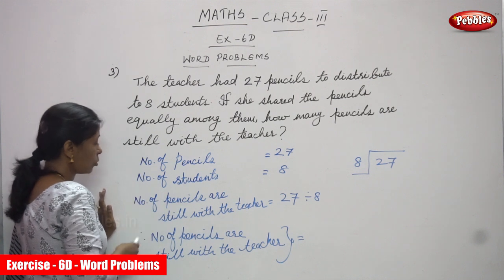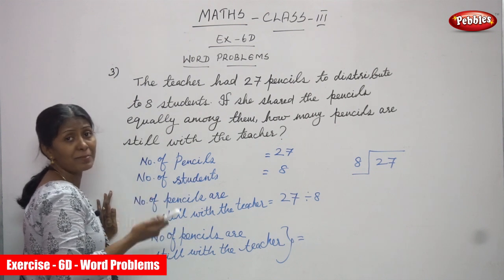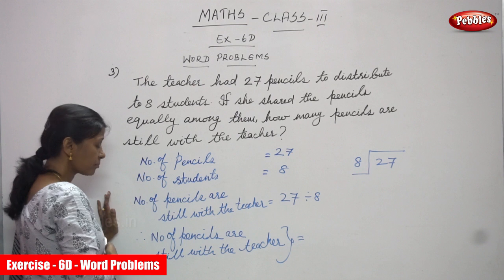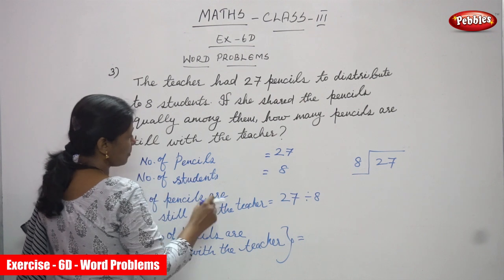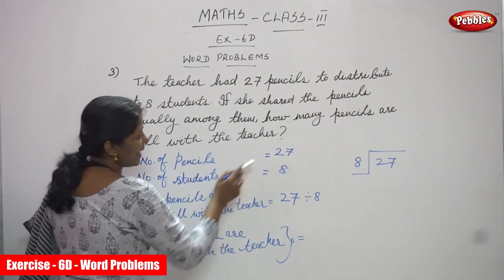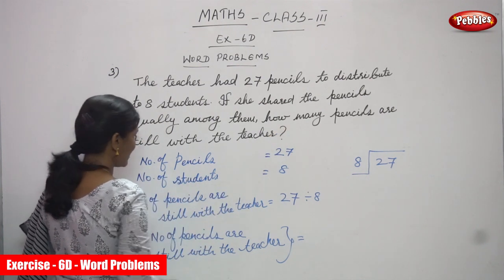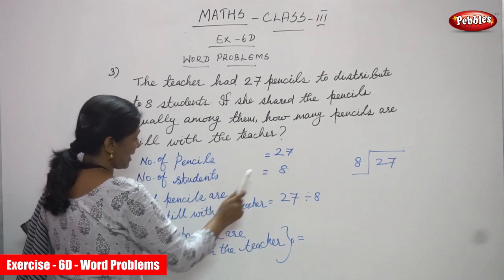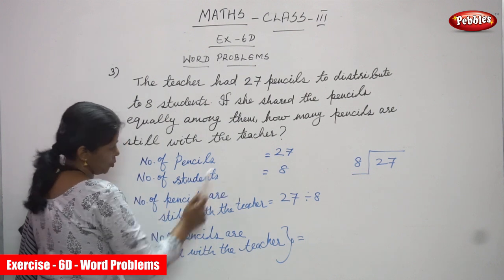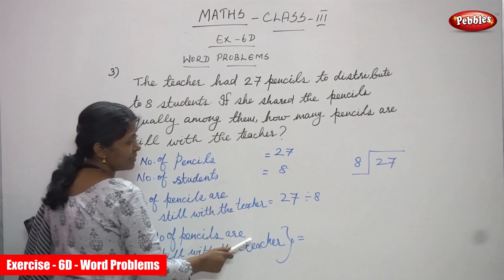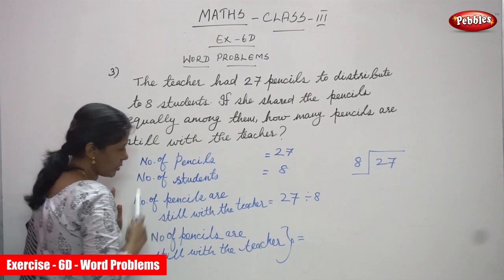That is what they are asking you — how many pencils are still with the teacher? That means how many remaining pencils are with the teacher? This is the question you have to find out. So if she shared the pencils equally among them — shared equally among 8 children — how many pencils are still with the teacher? So you have to find out only the remainder in this question. You have to find the remaining pencils.